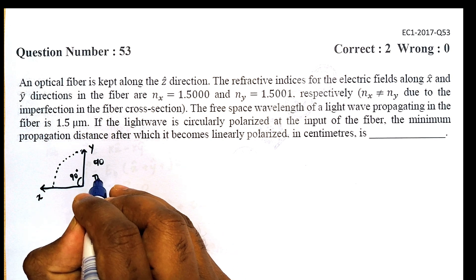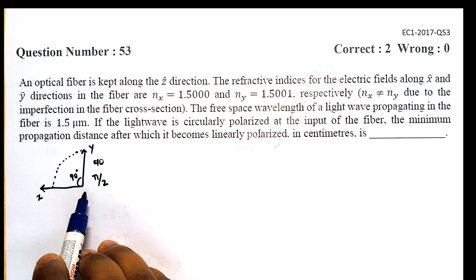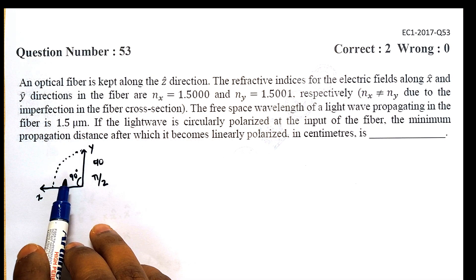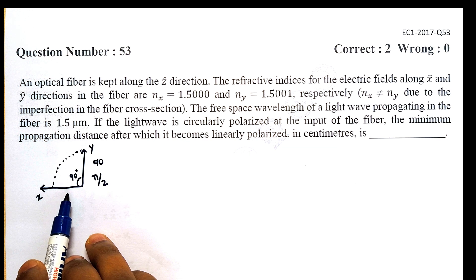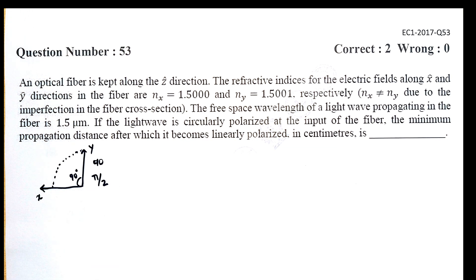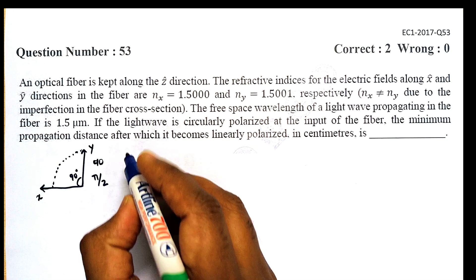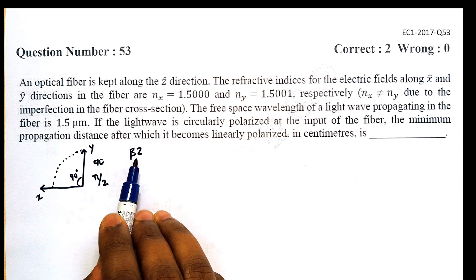In that case, the electric fields have to acquire a phase difference of π/2. And the phase of a wave is given as β·Z, where Z is the propagation direction and β is the propagation constant.